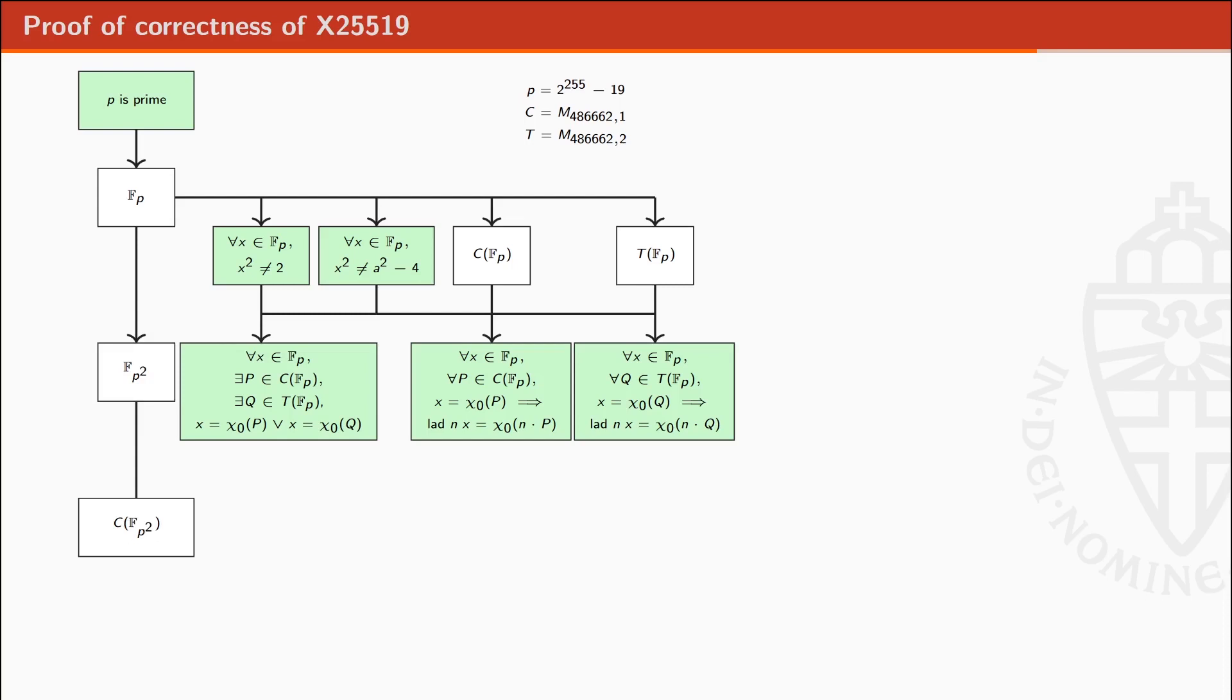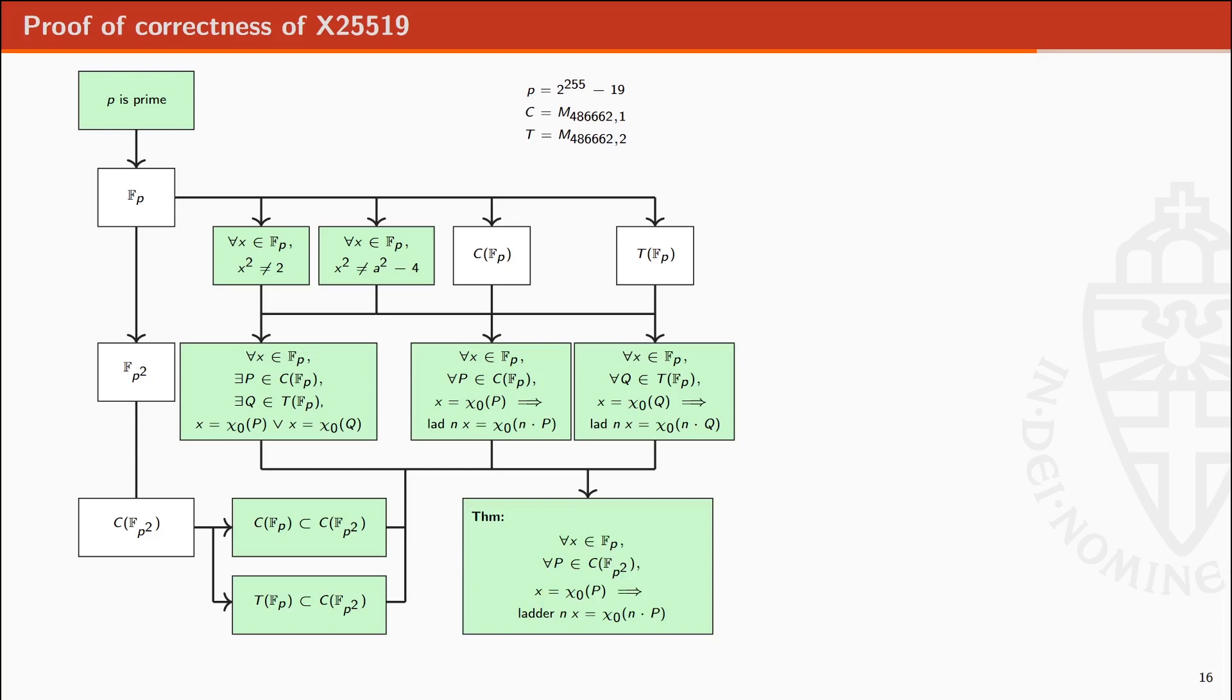We define Fp square and we define Curve25519 for all points over Fp square. By using isomorphism, we show that for points on the curve or on the twist, there exists the corresponding points in the quadratic extension. Using those five lemmas, we are able to prove our theorem.